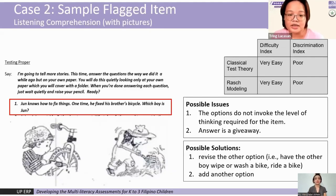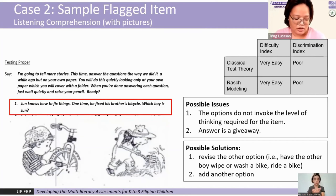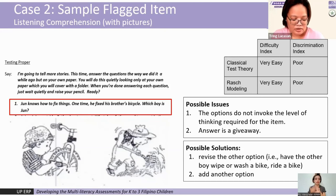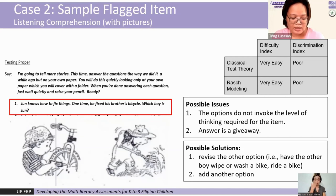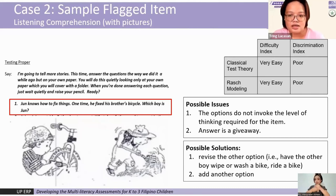Case 2 is a listening comprehension item with visual stimulus and is flagged based on our indices. Why did this item not perform well? Possible issues include: first, two options do not invoke the kind of thinking required for the item — the mere mention of the bike in the story makes the answer a giveaway, since only one image shows a bike. However, the decision is still to retain the item but to revise it by replacing the other option, perhaps with an image of a boy washing or riding a bike, or by adding that option to the existing ones.